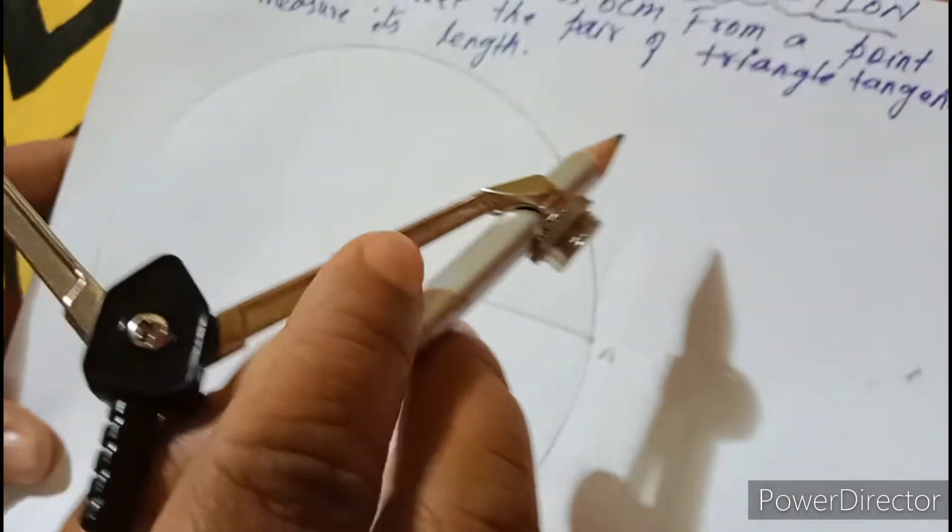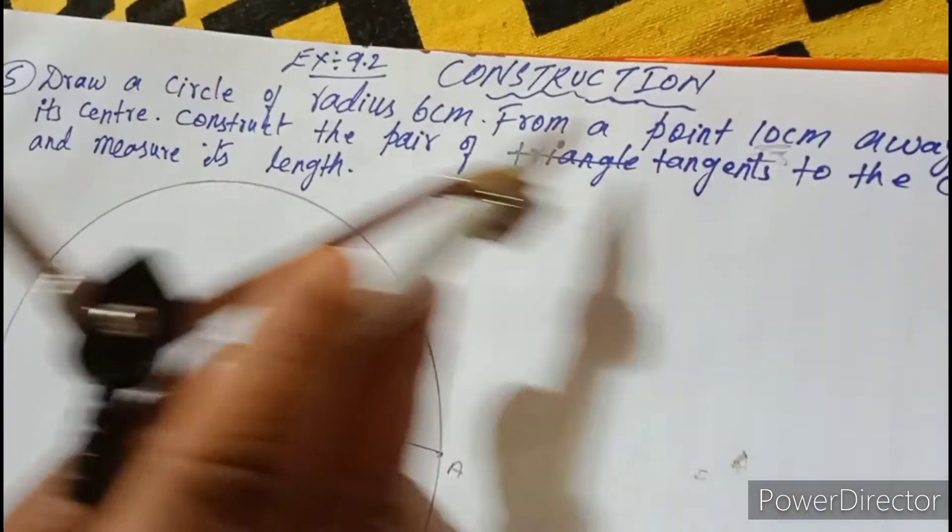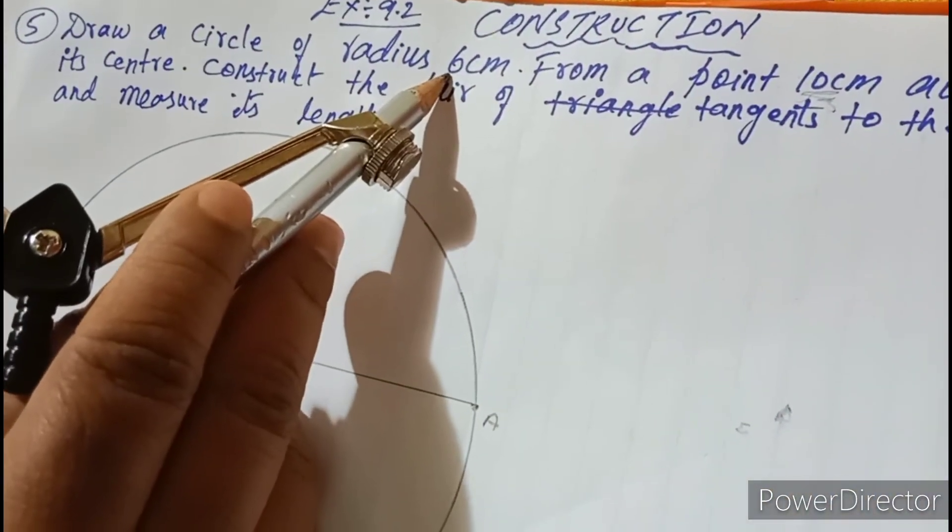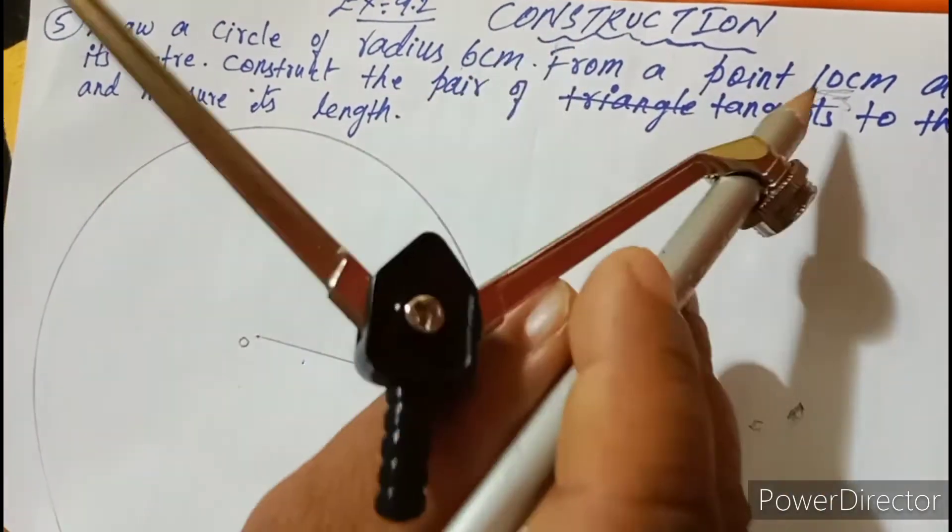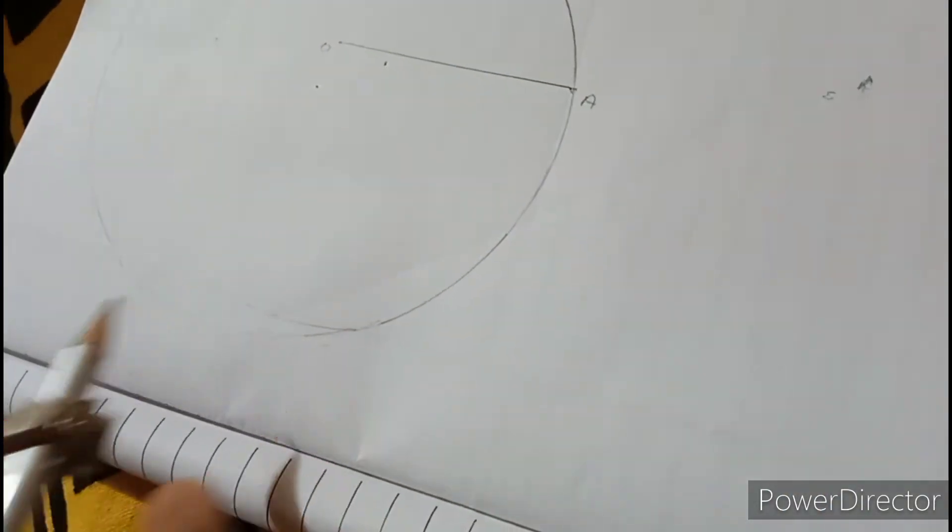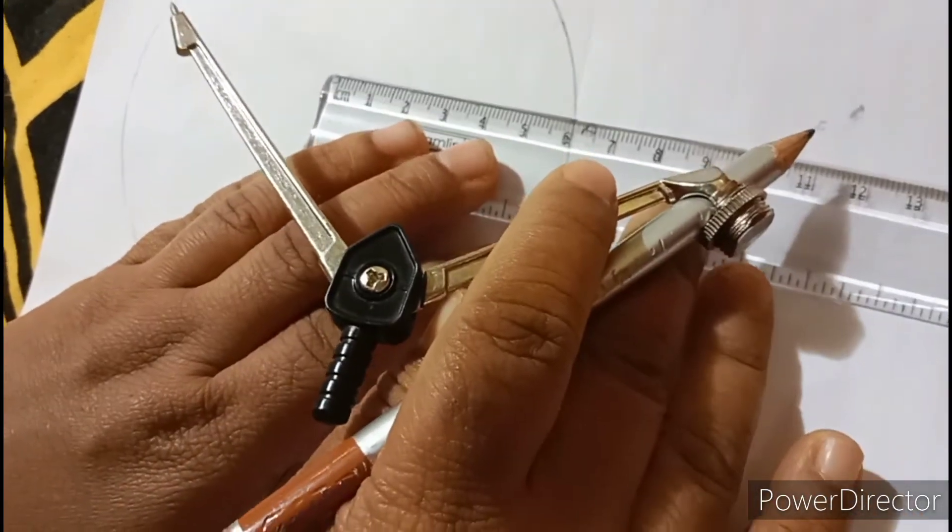Now, it is given 10 cm. You have to subtract this 10 and 6. Subtract 10 from 6, it will become 4 cm. 10 minus 6, 4. Extend this one. You extend this line to 4 cm. This is up to 6. Now, extend to 4.